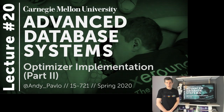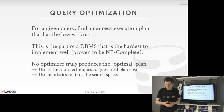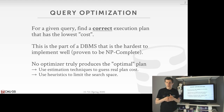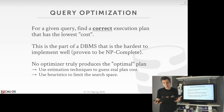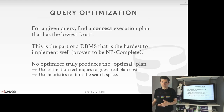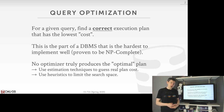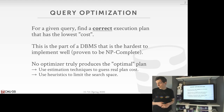Today is our second lecture on query optimization. The high level idea of what we're trying to do here today is: given a SQL query, we want to generate a physical execution plan for that query that is both correct — meaning it will generate the correct answer we expect — as well as has the lowest cost of all the query plans that we could examine.